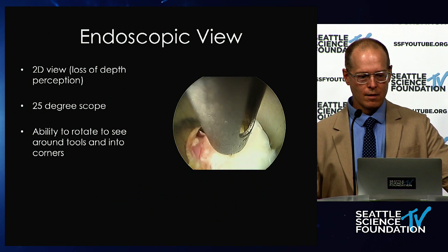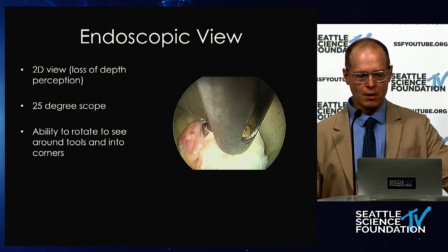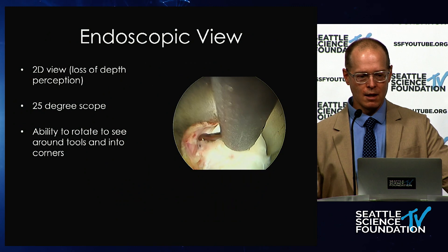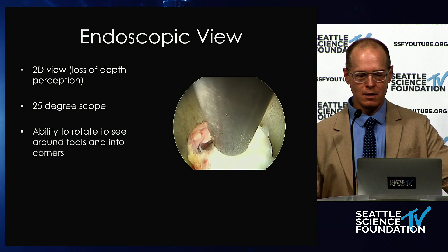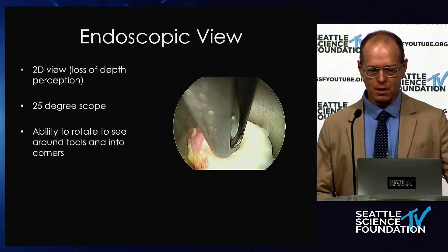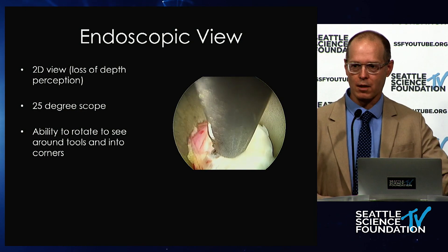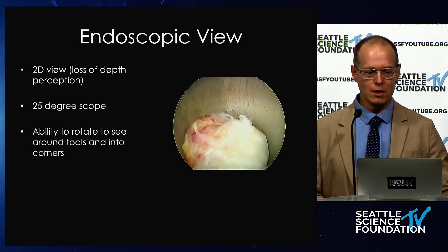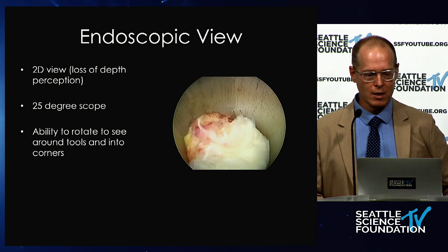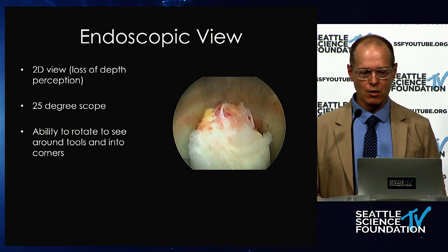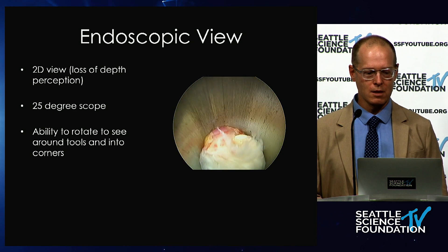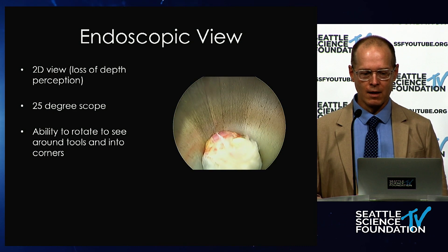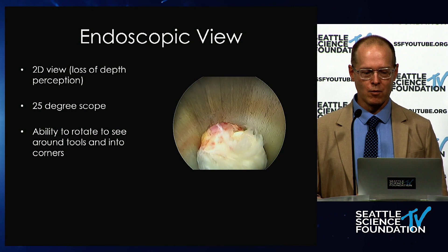Importantly, the endoscopic view is two-dimensional, so you have a loss of depth perception. But because the scopes are angled, you can typically see a lot more than in a normal microscopic operation. If you rotate the scope, you can see around your tool and see what it's doing from one side or the other, which is very, very beneficial.